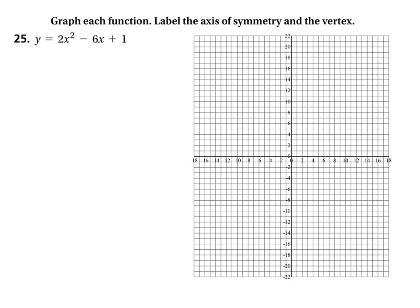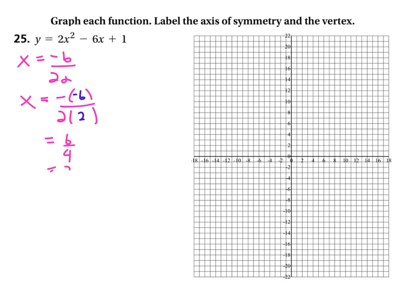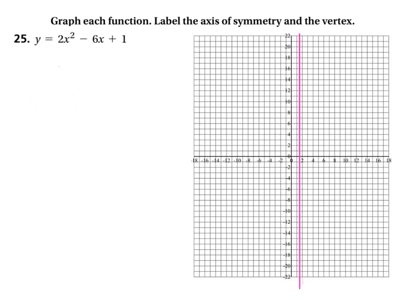For the last problem, we're finding the axis of symmetry again. x equals negative B over 2A. B is negative 6 and A is 2, so we get negative of negative 6 over 2 times 2, which is positive 6 over 4, or 3 halves. So we've got an axis of symmetry of x equals 3 halves, or 1 and a half. I'm going to draw that there and we can plug in 3 halves for x to find the vertex.